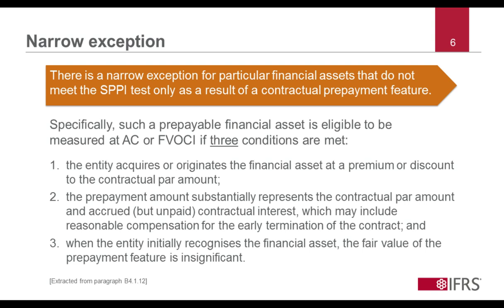There is a narrow exception in IFRS 9 that applies to financial assets that would otherwise meet the SPPI test but don't meet that test only as a result of a prepayment feature. Specifically, applying paragraph B4.1.12, such assets are eligible to be measured at amortized cost or fair value through other comprehensive income if three conditions are met. First, the entity must have acquired or originated the financial asset at a premium or discount to the contractual par amount. Second, the prepayment amount must substantially represent the contractual par amount and accrued but unpaid contractual interest, which may include reasonable compensation for the early termination of the contract. And third, the fair value of the prepayment feature must be insignificant when the entity initially recognizes the financial asset.